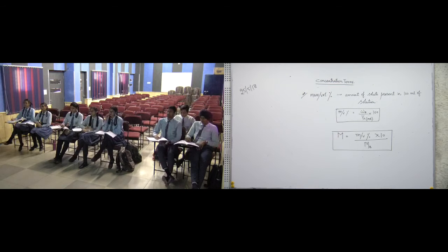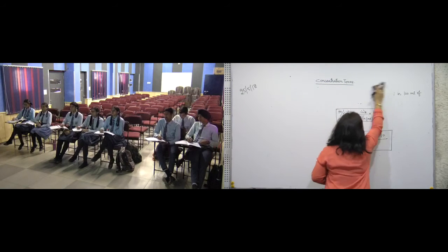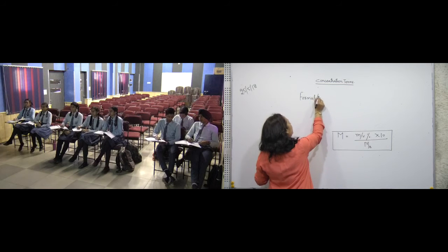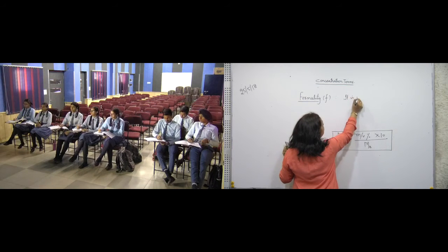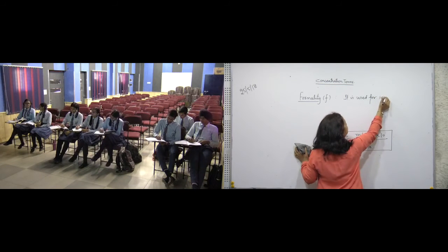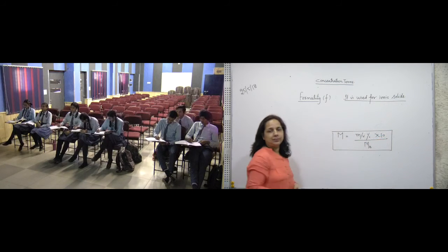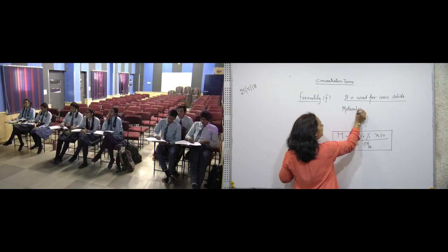The next term is formality, symbol F. Formality is used for ionic solids. For ionic solids, we use the term formality instead of molarity, because ionic solids may not have a true molecular mass in the conventional sense.